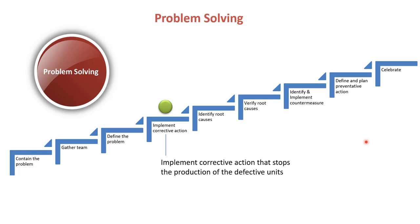And then you want to start implementing some corrective actions that stop the production of the defective unit. So in other words, if you have a defect and you define the problem, you've contained the problem. Now you have to implement some sort of corrective action that stops making bad parts. It could be some rework that happens, some temporary rework that might happen.